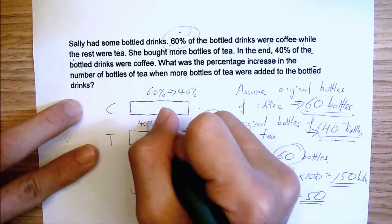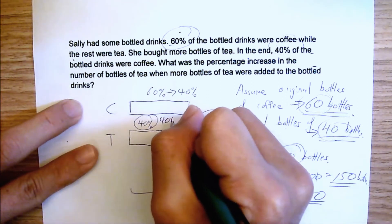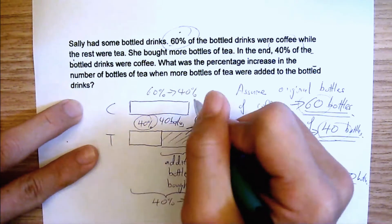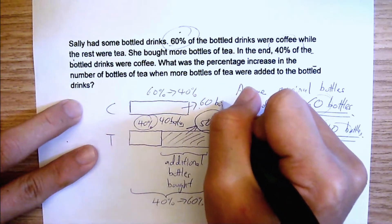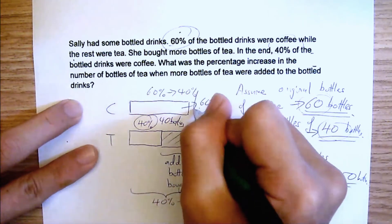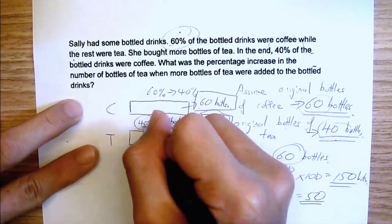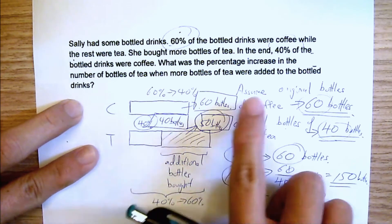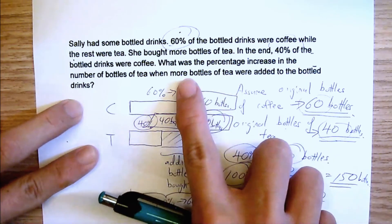This is actually how you do. And this will be your 40 bottles. And this one, no change, right? This one is still 60 bottles. Now, it's only when you have the absolute, it makes it a lot easier for you to do the question. Now, they said, what was the percentage increase in the number of bottles of tea?